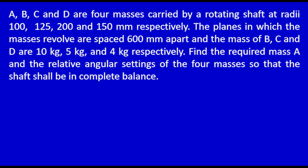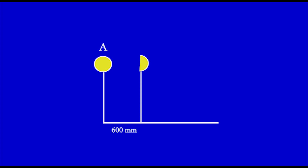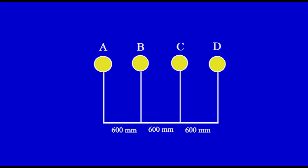The problem statement provides the distance between 4 planes A, B, C, D as 600 mm each. I begin by drawing a horizontal line and marking plane A on the left side. Next, I mark plane B positioned 600 mm to the right of plane A. I continue by marking plane C 600 mm to the right of plane B. And finally, I mark plane D which is 600 mm to the right of plane C.